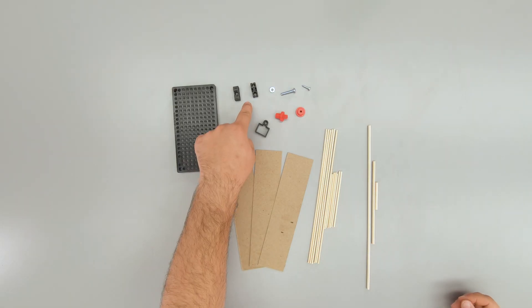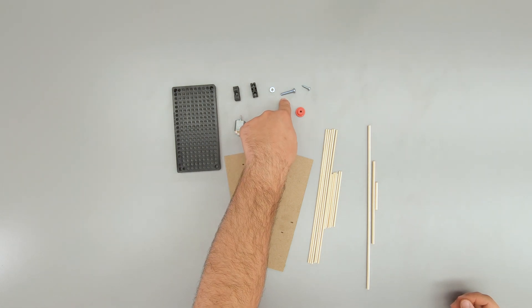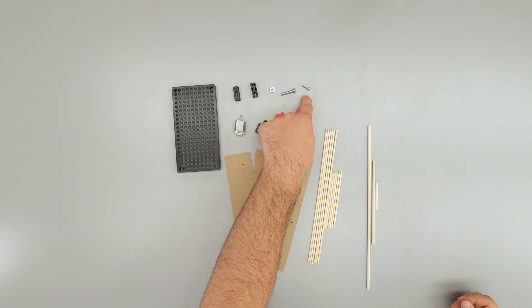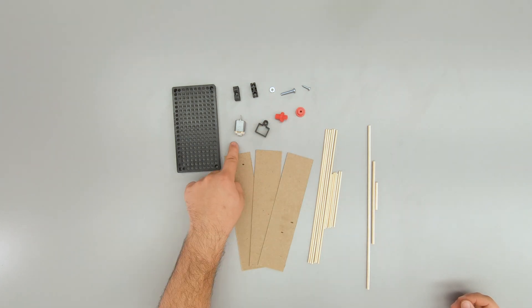One hole plate, two perpendicular blocks, one number 10 nut, one number 10 25 millimeter or one inch screw, one mini hub screw, one mini hub cover, one mini hub base, one small motor mount, and one small motor.